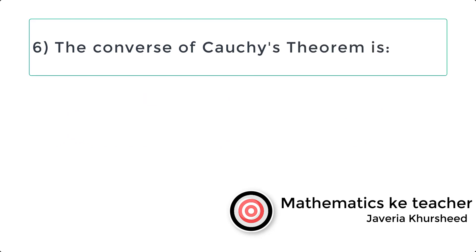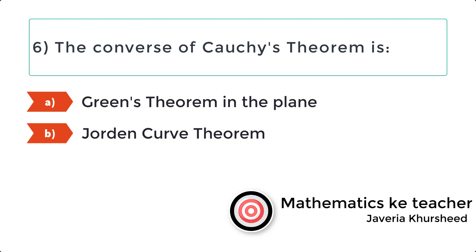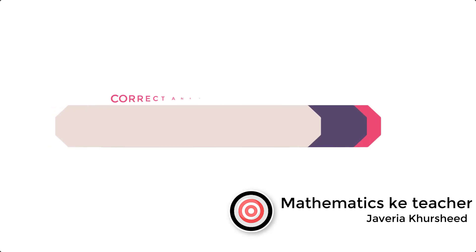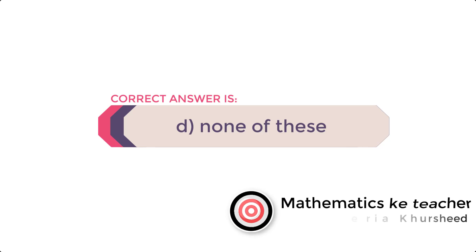Question 6: The converse of Cauchy's Theorem is: A) Green's theorem in the plane, B) Jordan curve theorem, C) Thomas theorem, D) None of these. Correct answer is D) None of these.